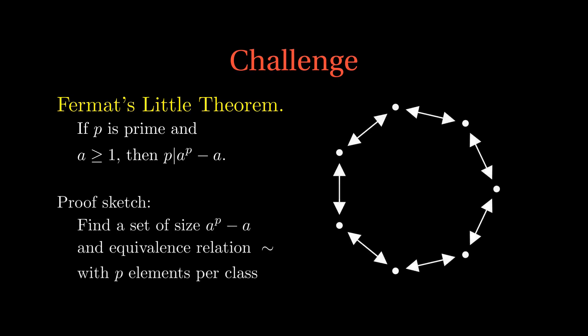And that brings us to today's challenge problem, Fermat's Little Theorem. If P is prime and A is greater than or equal to 1, then P divides A to the P minus A. A combinatorial proof of Fermat's Little Theorem consists of a set of size A to the P minus A and an equivalence relation where any class has exactly P elements. Given that, the statement follows. So rather than a trijection, see if you can find a P-jection on a set of size A to the P minus A to get the job done.